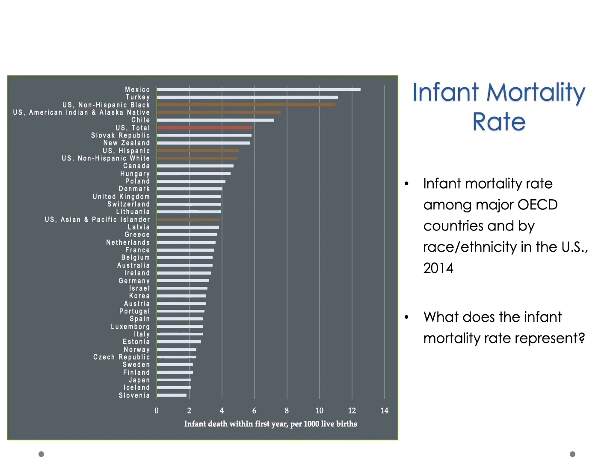The U.S. rate is higher than just about every country in Europe, and closer to the mortality rate of Chile, which is considerably poorer than the United States. We should ask: what does this infant mortality represent? Both epidemiologists and sociologists note the very high infant mortality rate, and both would note that different racial groups have different rates of infant mortality.